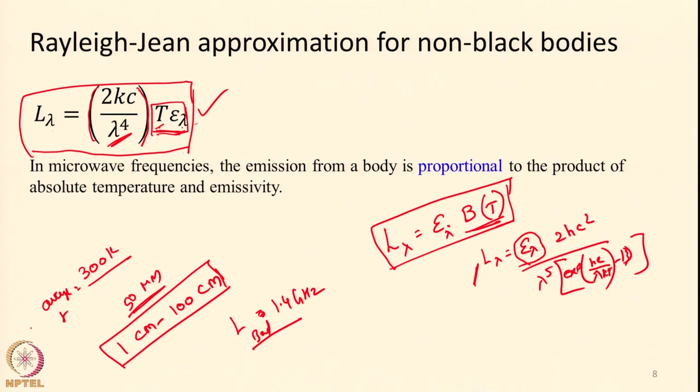As a summary, in this lecture we have been introduced to the concept of passive microwave radiometry, seen the spectral bands used, and discussed in detail the conversion of Planck's law from wavelength to frequency using the chain rule. We also covered the Rayleigh-Jeans approximation, which simplifies calculations and clarifies the linear relationship between temperature, emissivity, and radiance. With this we end the lecture. Thank you very much.